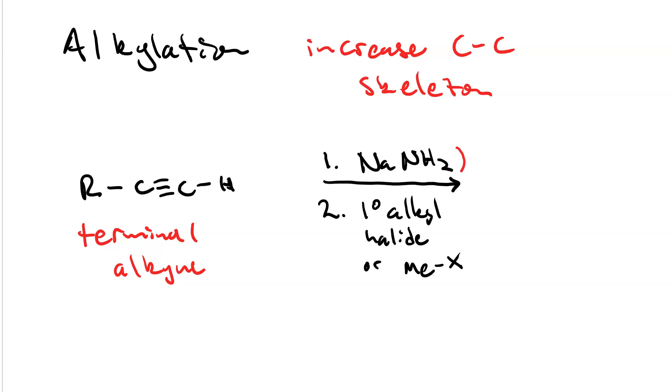The alkynide that's produced by reacting with the sodium amide is a strong nucleophile which can then perform nucleophilic attack on either a primary alkyl halide or a methyl halide. And this gives us a high yield of our new internal alkyne.